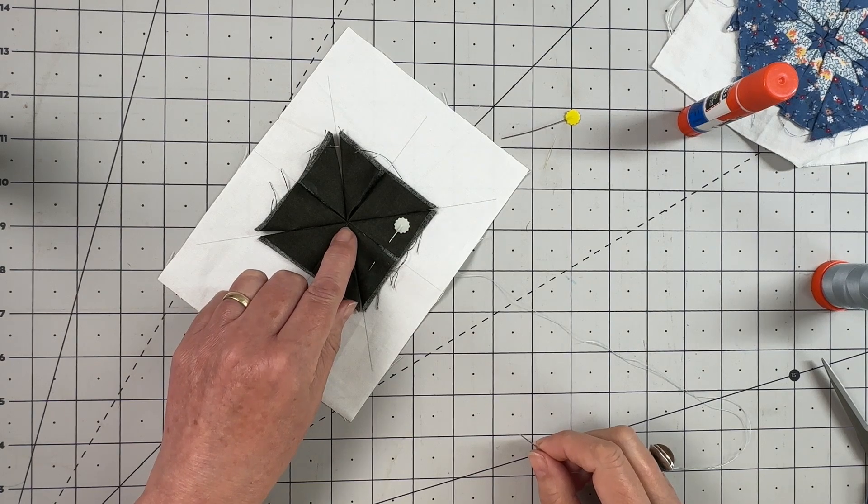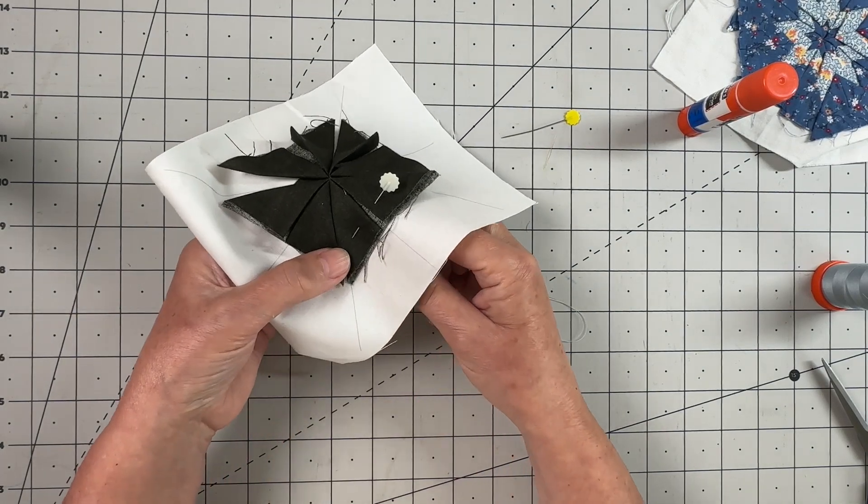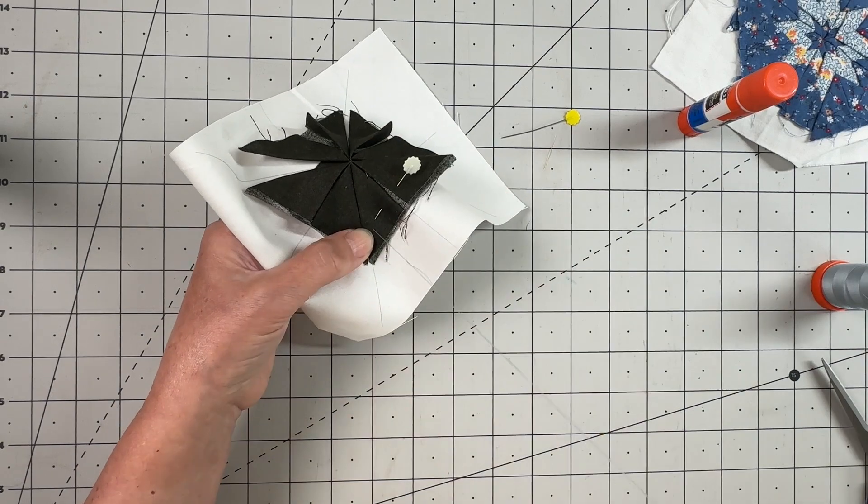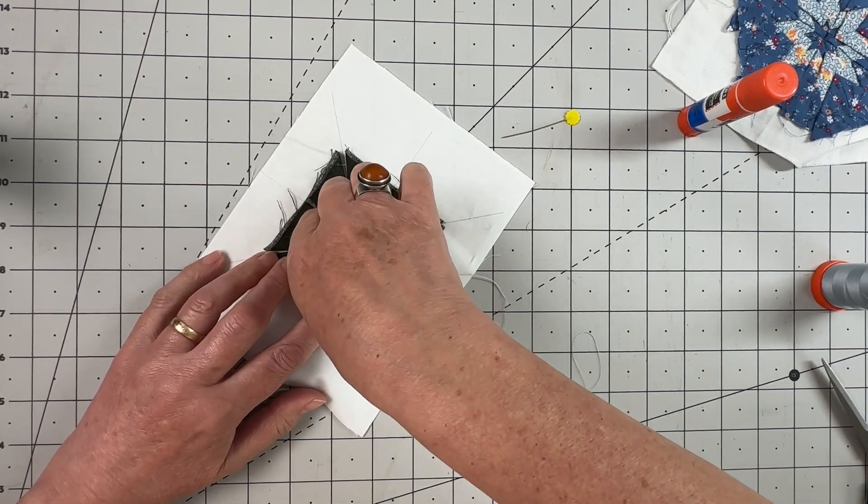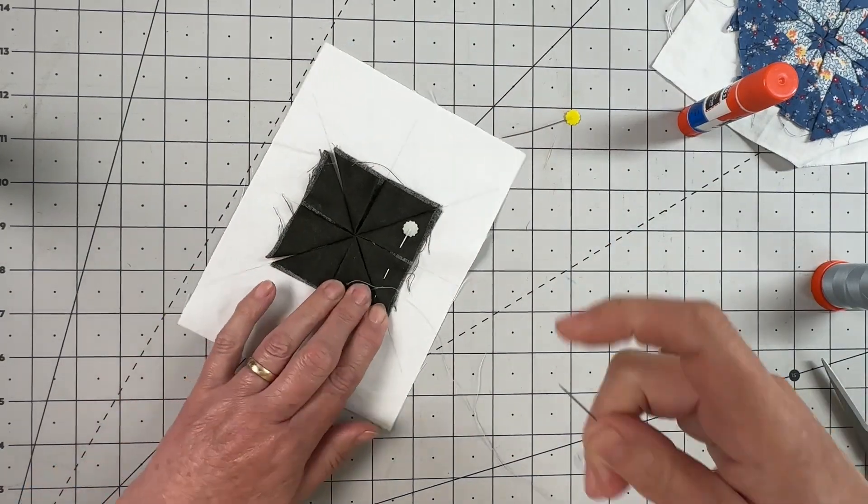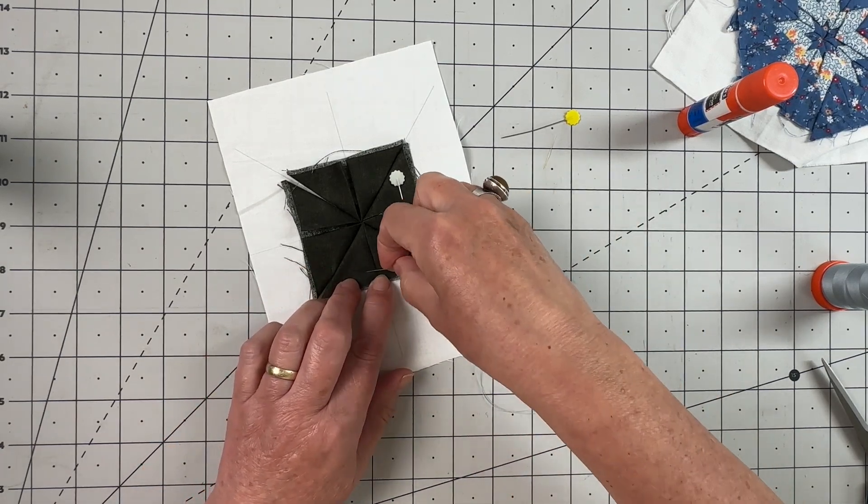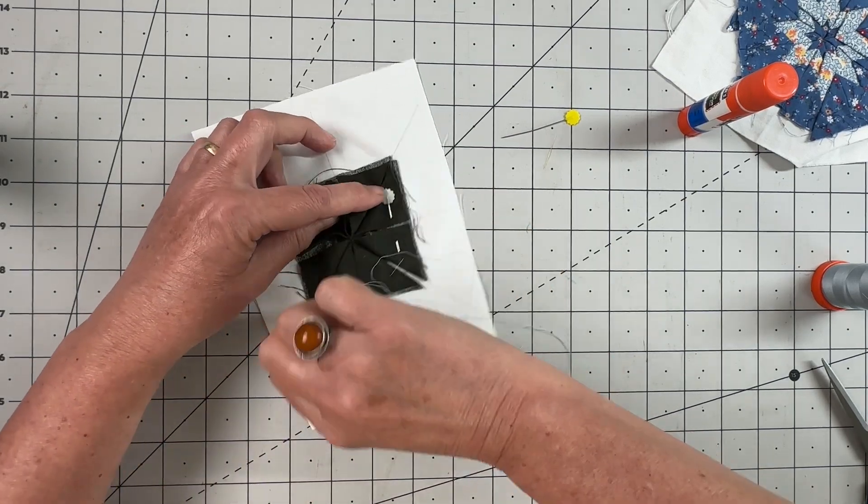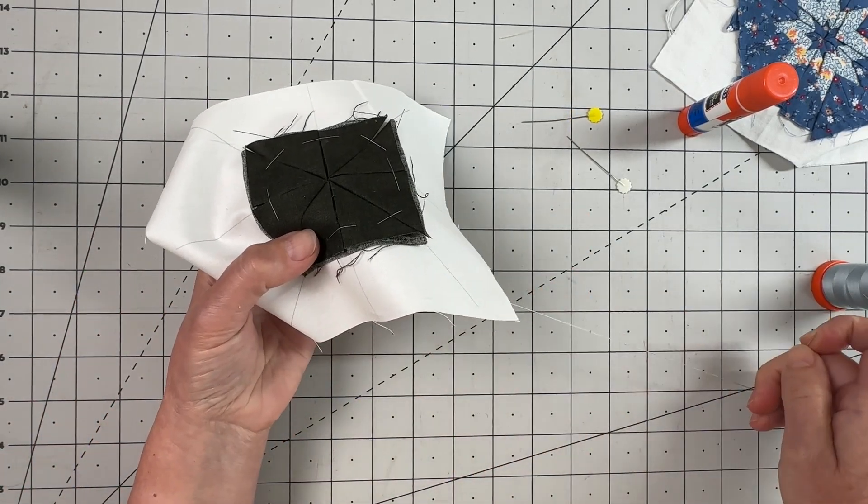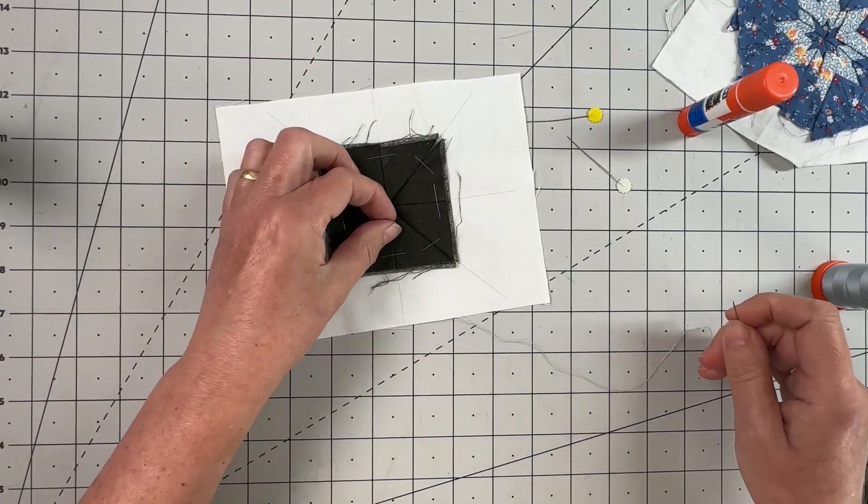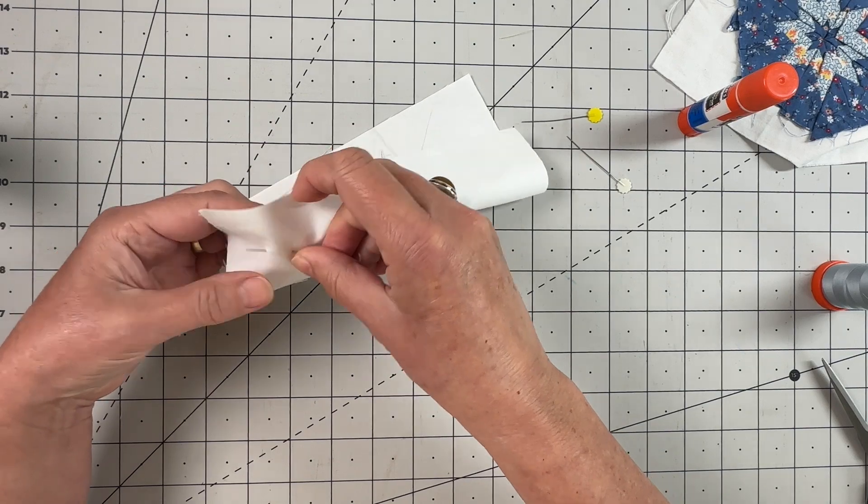Once you've caught all of the points into the center from the back, you're going to bring your work out and go all the way around the outside just with big tacking stitches, catching down and securing those folds and outside edges of your triangle. This is my last piece, so I can take my needle and thread to the back and leave it attached because I'm going to use it for my next round.